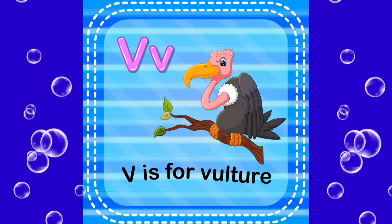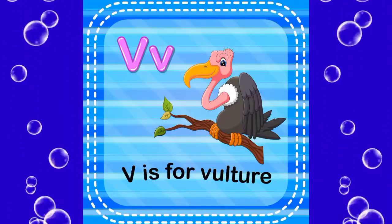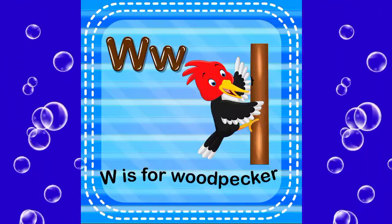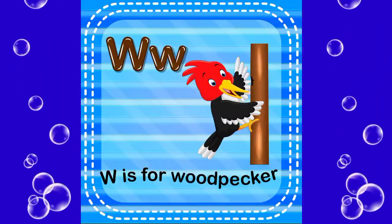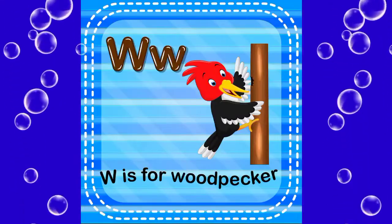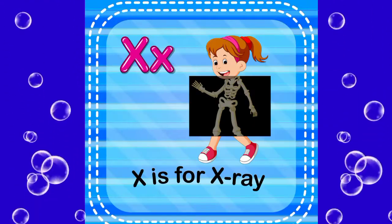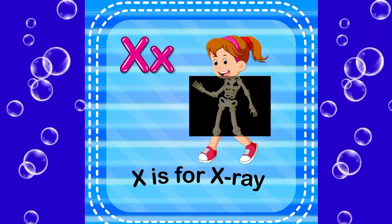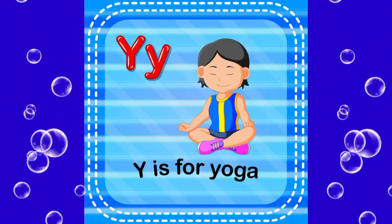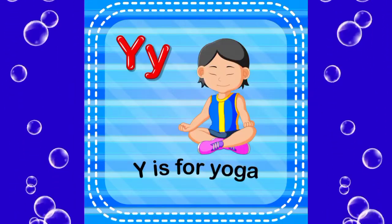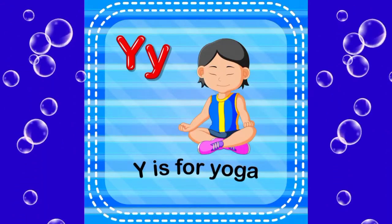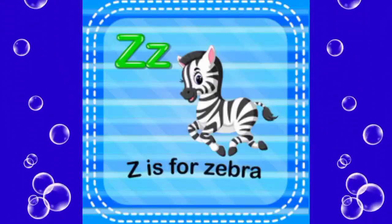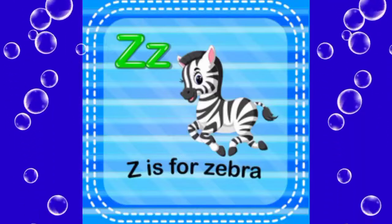D is for wonger, W is for woodpeaker, X is for x-ray, Y is for yoga, Z is for zebra,